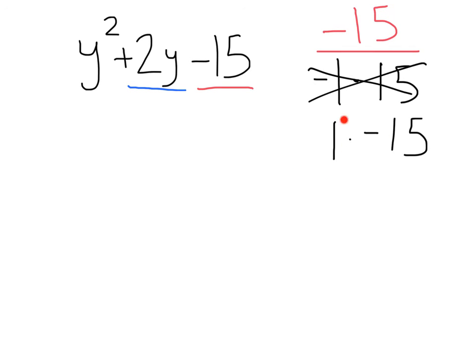Now, check this out. Instead of negative 1 and positive 15, we can do 1 times negative 15. That's also negative 15. Now, we can do 1 plus negative 15. Again, that's not going to give us what we want. But, you can see that we have two options where the positive and the negative go.